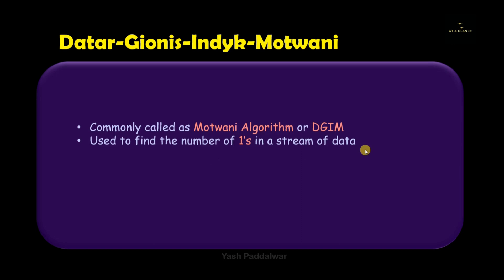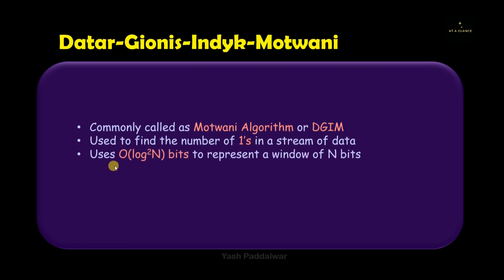This particular algorithm is specifically used to find the number of 1s in a given stream of data. The stream will be continuous and huge, so whenever we want to count any specific element occurrence in the given stream of data, we can use this algorithm.